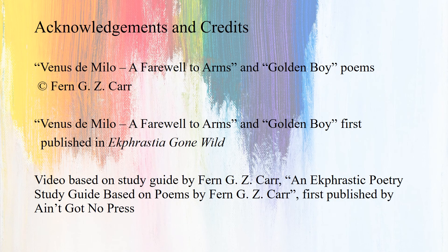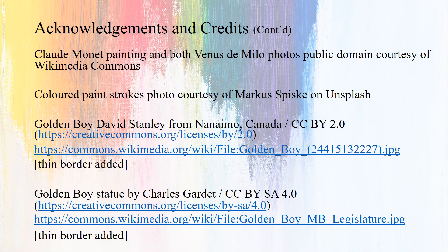Acknowledgements and Credits. Venus de Milo, A Farewell to Arms, and Golden Boy poems copyright Fern G. Z. Carr. Venus de Milo, A Farewell to Arms, and Golden Boy were first published in Ecfrastia Gone Wild. This video is based on a study guide by Fern G. Z. Carr, an ekphrastic poetry study guide based on poems by Fern G. Z. Carr, first published by Ain't Got No Press. Claude Monet painting and both Venus de Milo photos are public domain, courtesy of Wikimedia Commons. Colored paint strokes photo courtesy of Marcus Spiska on Unsplash. Golden Boy photo by David Stanley, and Golden Boy statue by Charles Gardet photo, both are licensed images courtesy of Wikimedia Commons.